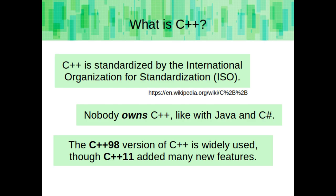C++ is standardized by the International Organization for Standardization, or ISO. Nobody owns C++ like with Java and C#, where Java is owned by Oracle currently, and C# is owned and created by Microsoft. The C++98 version of C++ is widely used, though C++11 has added many new features.